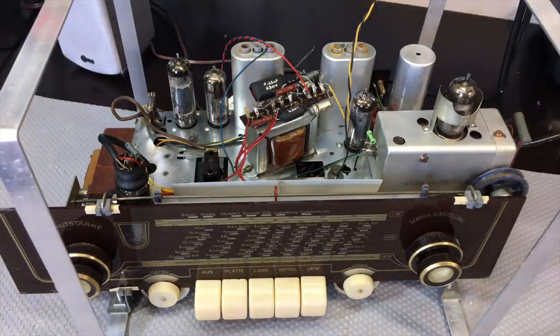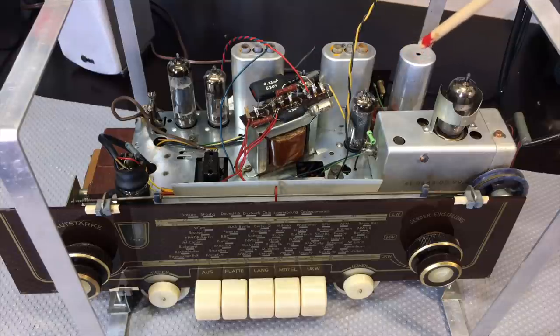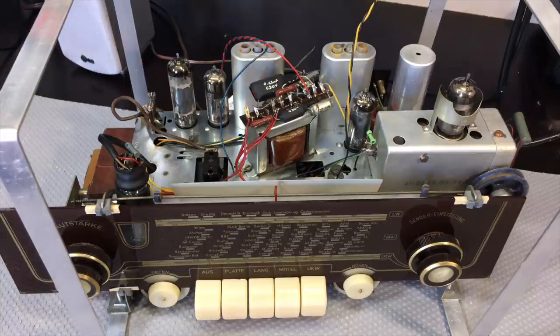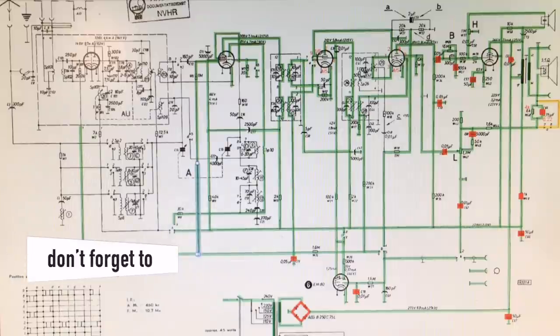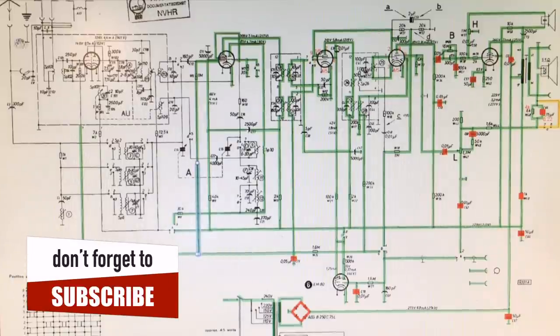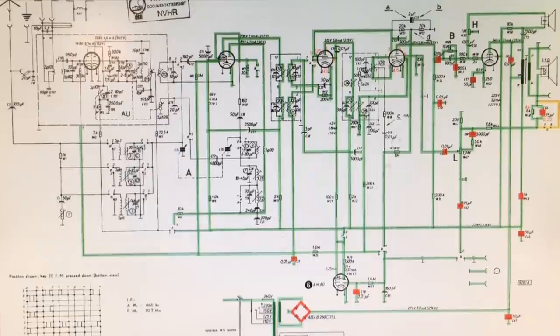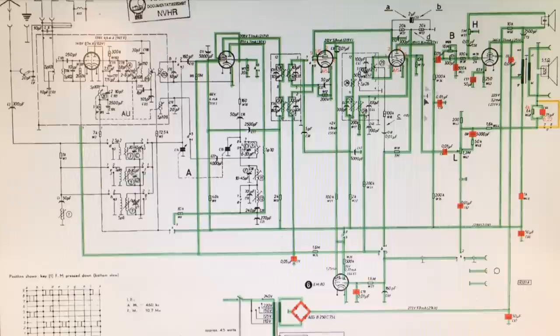But most of what was done was on the other side. And most of what was done is not really apparent, because most of it was just checking connections and checking components. Let me show you the schematic and how much has been done on there. This gives you an idea of how much work has actually been done. Everything that's in green has been checked.